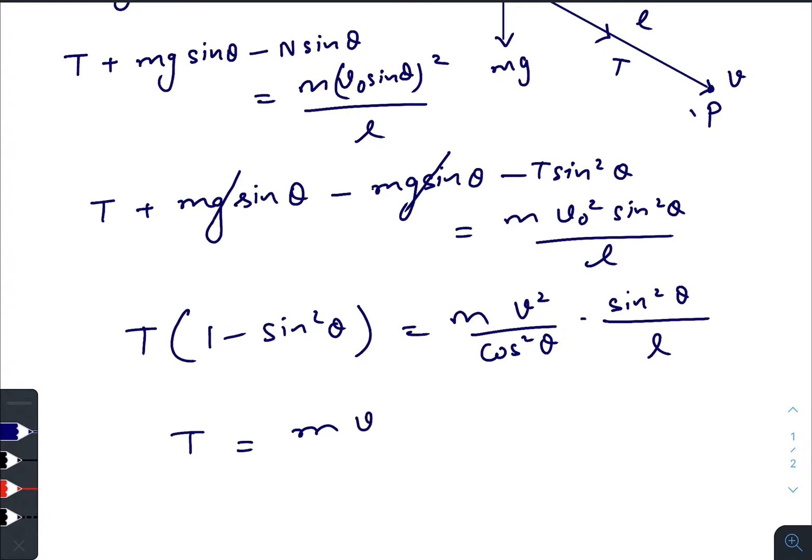So it will give you T V square sine square theta. From here we will get cos square theta and it will get multiplied with this one and the final answer will be cos to the power 4 theta.